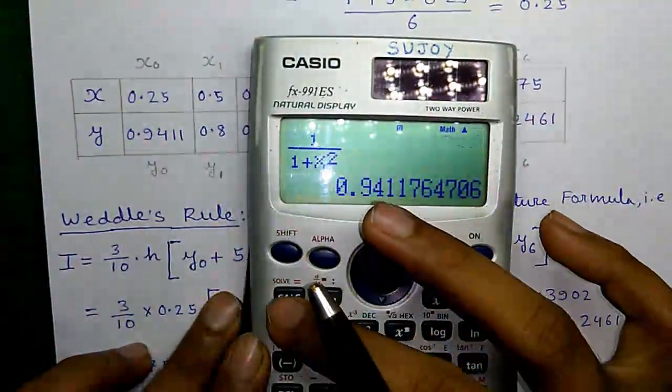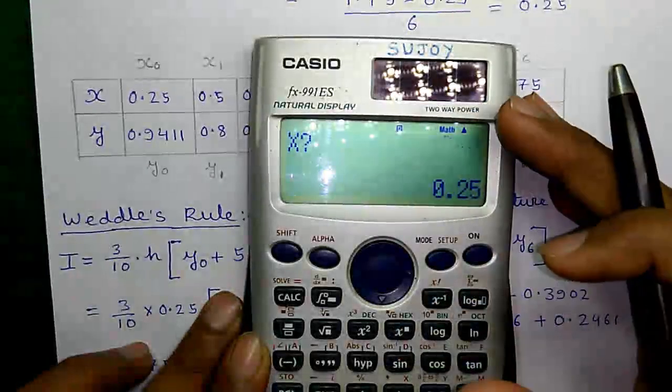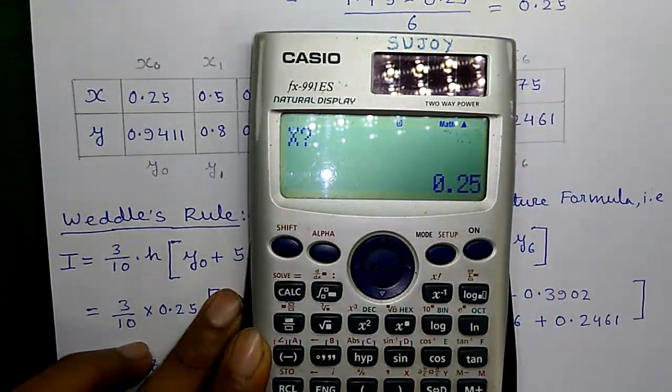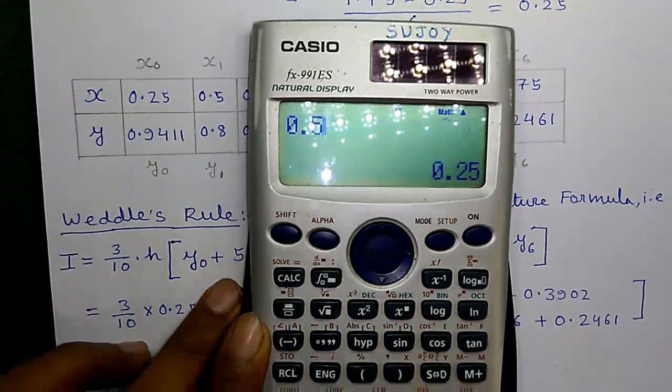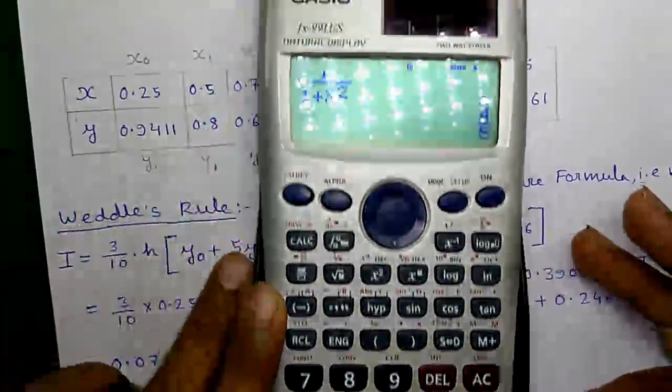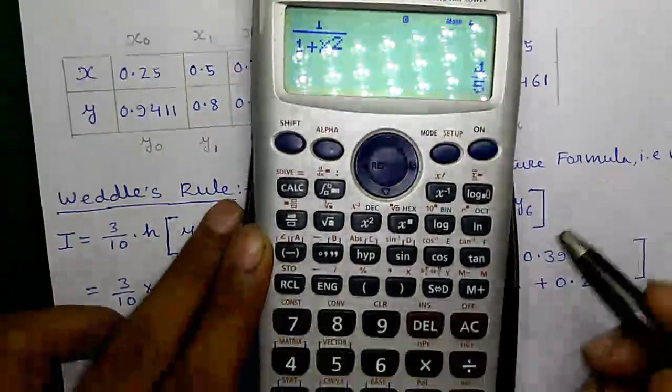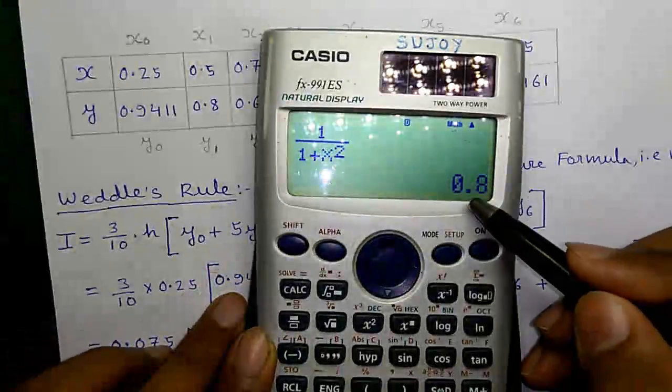Similarly, for x equals to 0.5 again press calc 0.5 and press equals to which is 4 by 5.